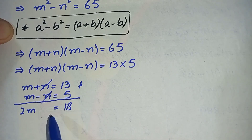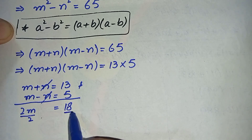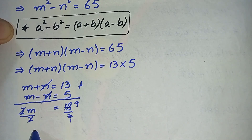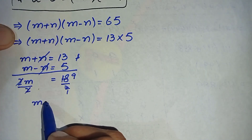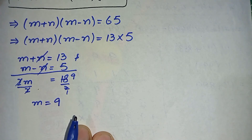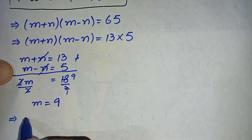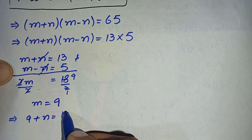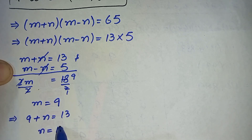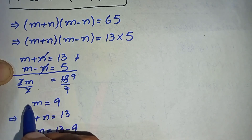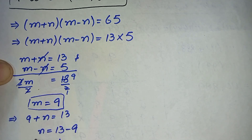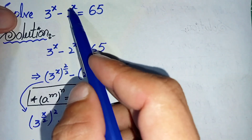After cancellation, only 2m remains, equal to 13 plus 5 which is 18. Dividing both sides by 2 gives m equal to 9. To find n, we substitute m equals 9 back: 9 plus n equals 13, so n equals 13 minus 9, giving n equals 4. So m is 9 and n is 4.